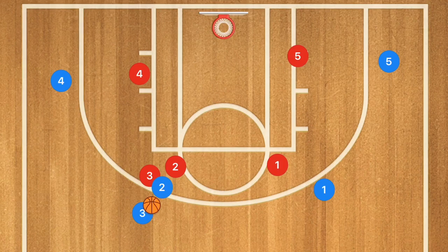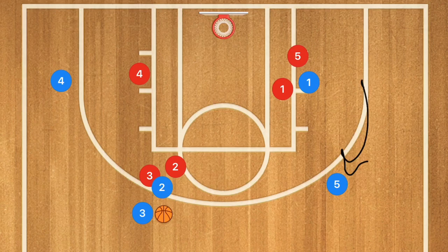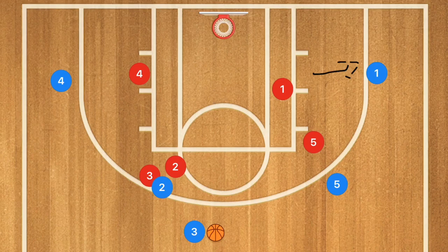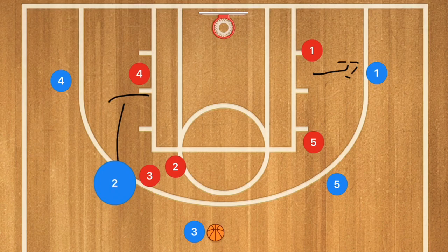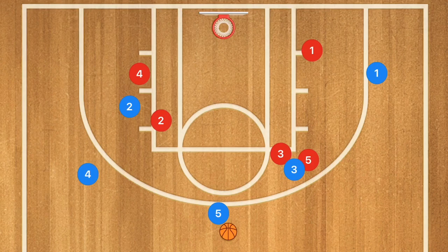At the same time, when player one finishes his screen, he's going to screen away for player five. Player five is going to fill that spot. Player three gets the ball and could drive or take that shot. He could also pass over to player five for a three-point shot. Then player one is going to pop out, and player two is going to screen away for player four.